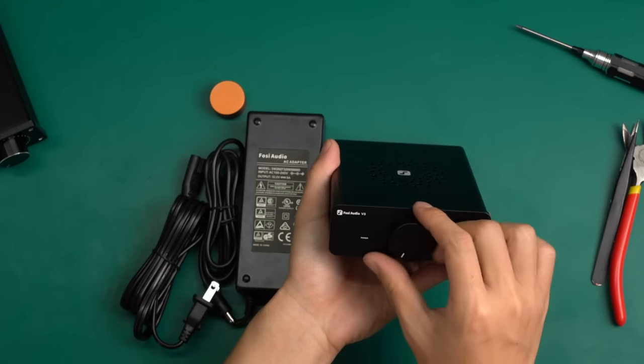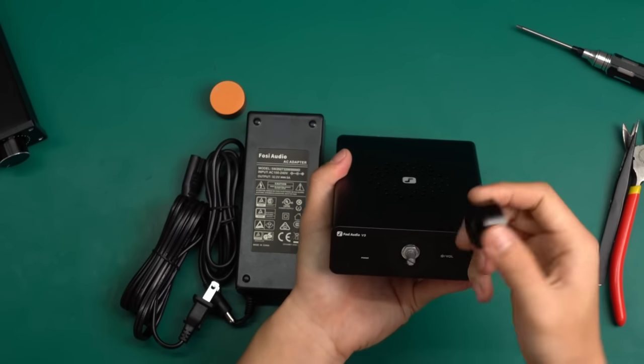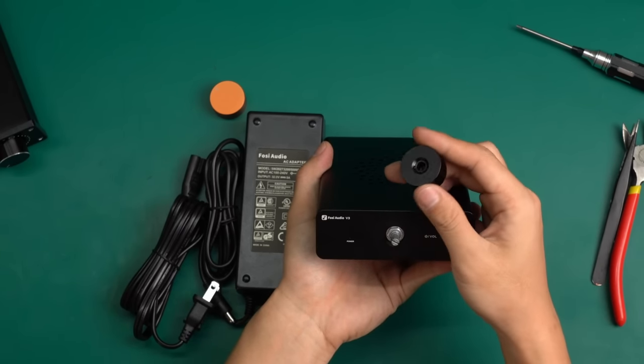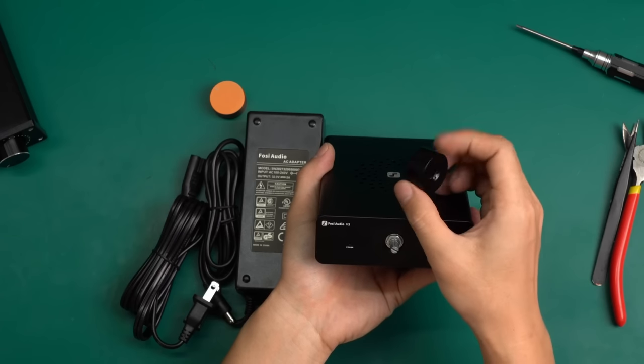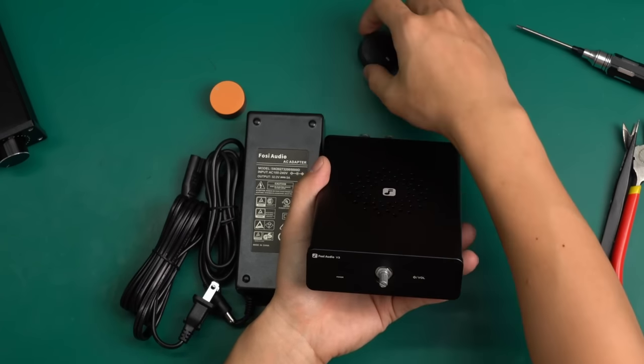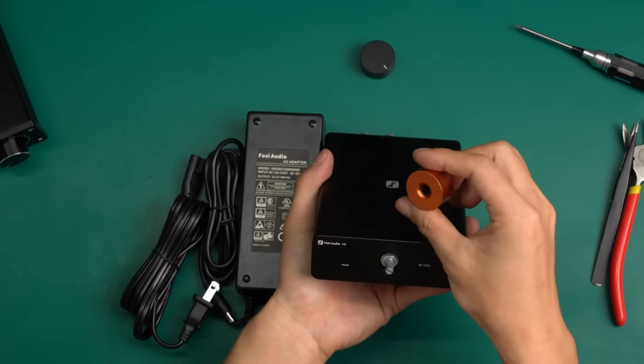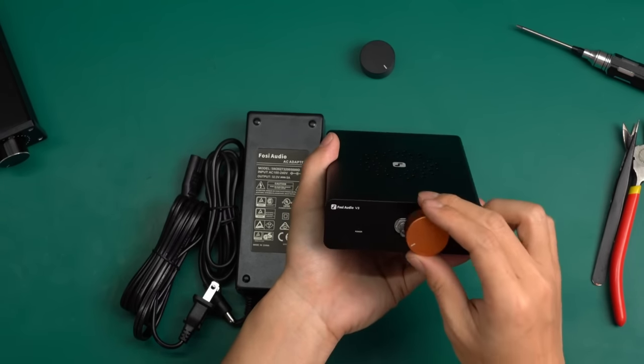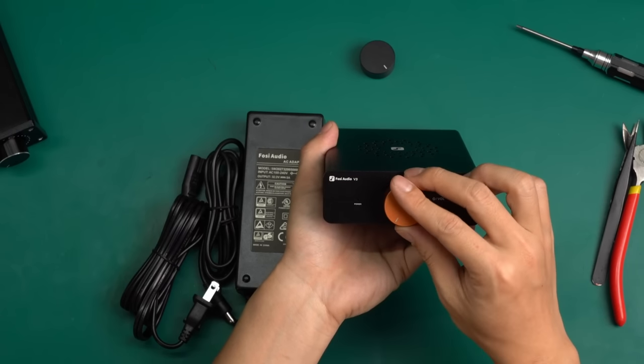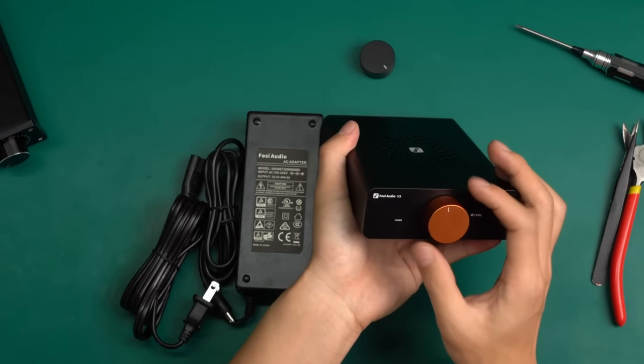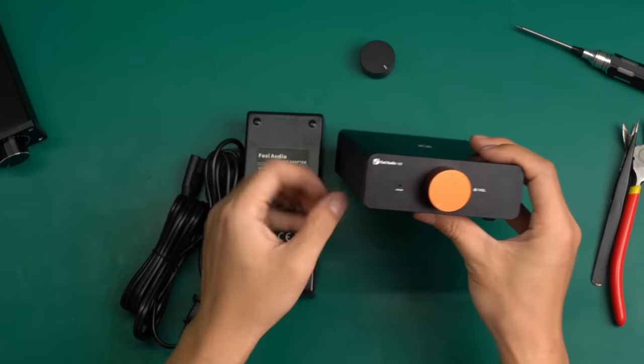The knob on the unit can be easily removed and replaced. This aluminum alloy knob is very robust and finely crafted. Compared to the black knob, I really prefer this orange one. This orange serves as a great embellishment, and it looks more upscale when installed. Once it's on, I don't think I'll switch back to the black one.